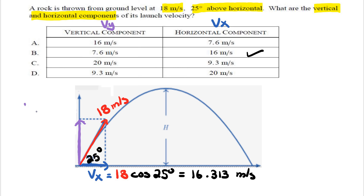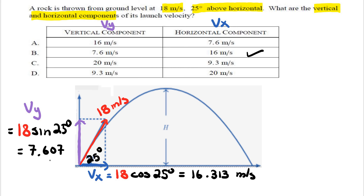For the vertical velocity component Vy, we combine that by taking the launch velocity of 18 and instead of cosine, we multiply by sine of the angle, which is sine of 25 degrees. Putting that into a calculator we get roughly 7.607 meters per second, which is roughly option B. That's the first question; let's move on to the next one.